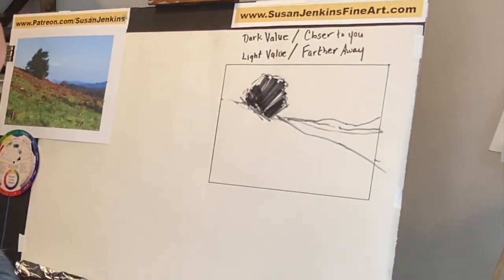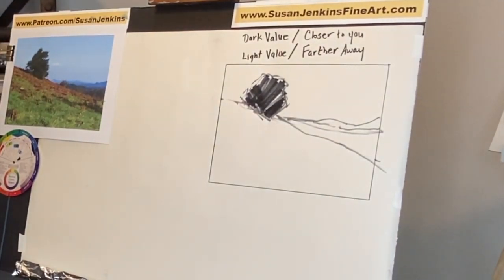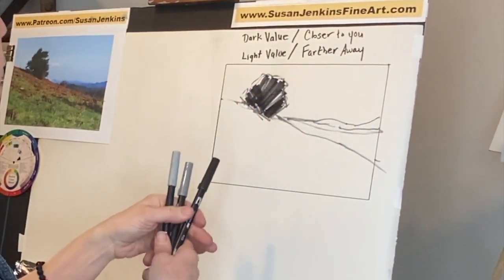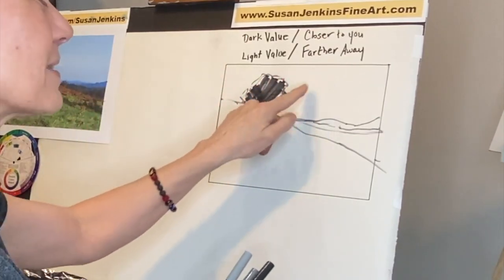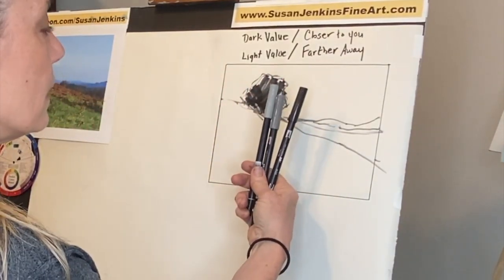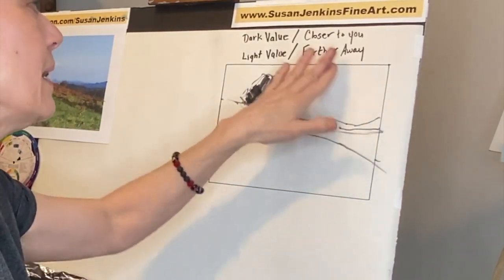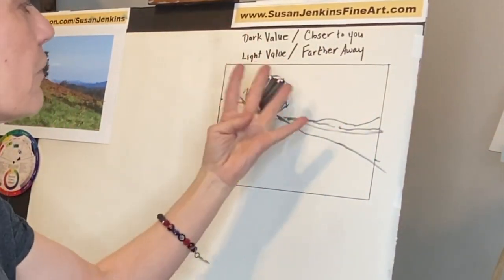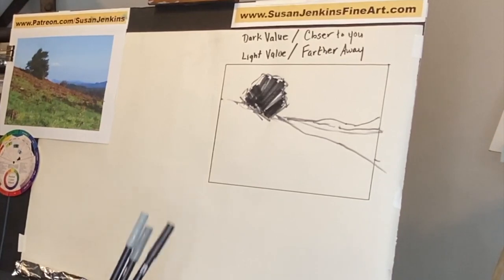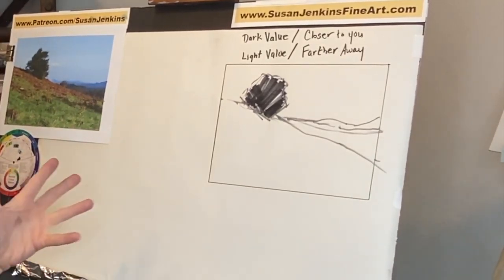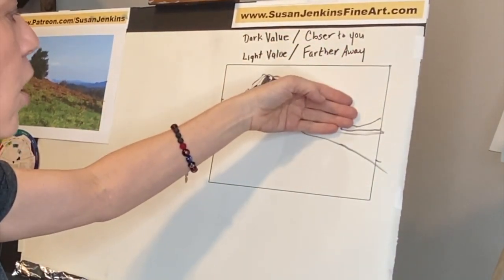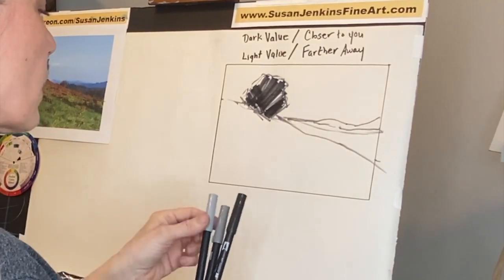Now, what is the lightest thing in the scene? It's almost always — even if it's a night scene, because everything else is darker in the foreground — it's almost always the sky. I don't even need to do anything with the sky now because the white of the paper, or the cream of the paper in this case, is my lightest value. So the paper surface is the fourth and lightest value. Now, what is the next? Let's go darkest to lightest. We've determined darkest value and lightest value — almost always.